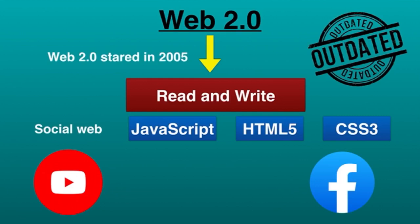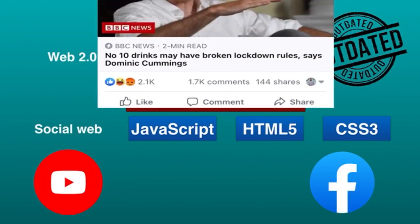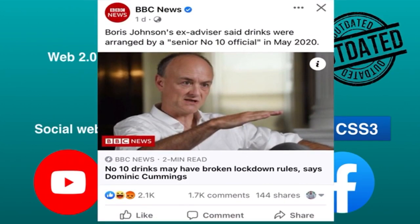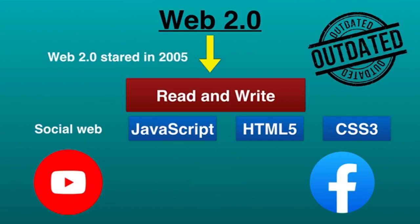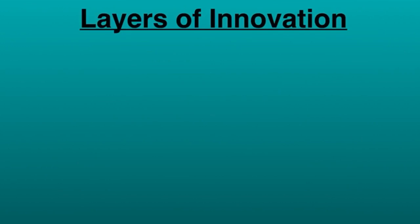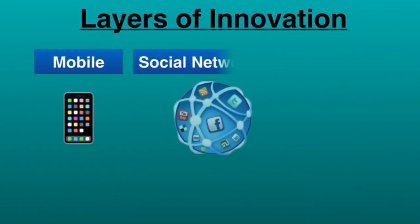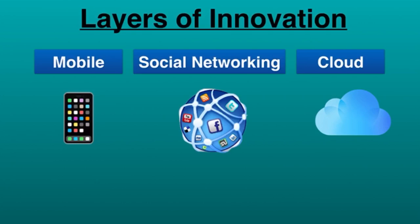Web 2.0 enabled users to create online interactive content and to engage with each other over the internet via social media, blogs, and other services. When you go on Facebook to read a post, you can now like, comment, and share — that wasn't possible in Web 1.0. Web 2.0 was driven particularly by three core layers of innovation: mobile technology, social networking, and cloud technology.